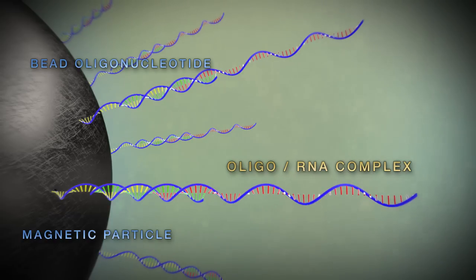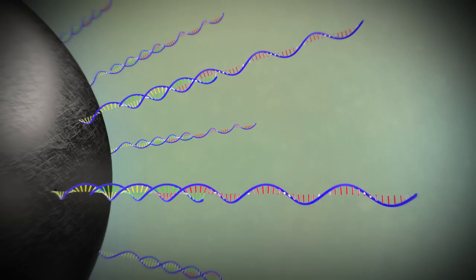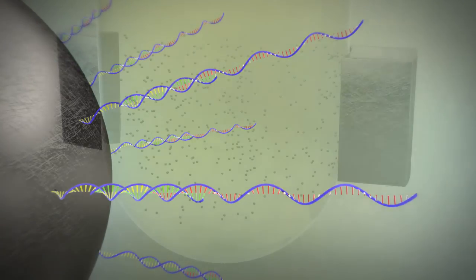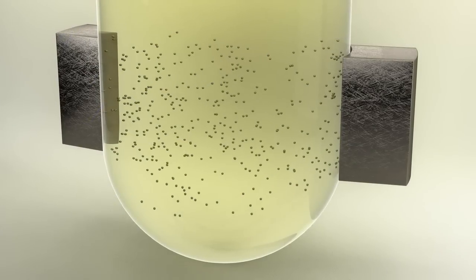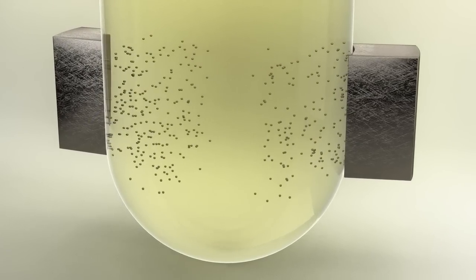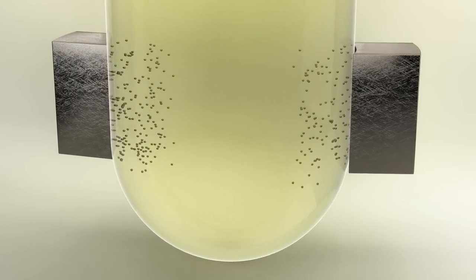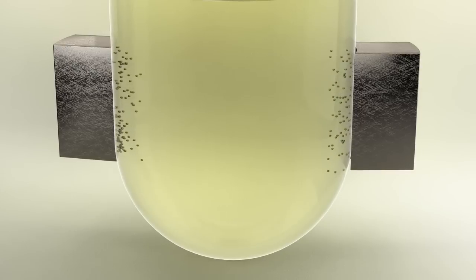This process captures thousands of target RNA strands from each sample. The tube is then moved to a magnetic parking station where the beads with the captured RNA strands are pulled to the sides of the tube with magnetic force.